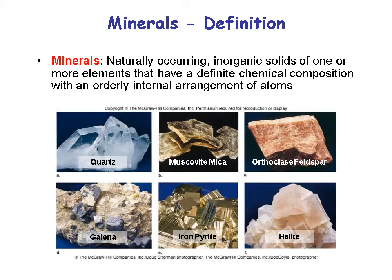Minerals are naturally occurring, inorganic solids of one or more elements that have a definite chemical composition with an orderly internal arrangement of atoms. They're natural, not organic — not like oil or coal — they're solids, not liquid or gas, and they have a definite chemical composition. Quartz and feldspar are arranged in a framework; in the case of mica, they're arranged in sheets, and the mica breaks as sheets.